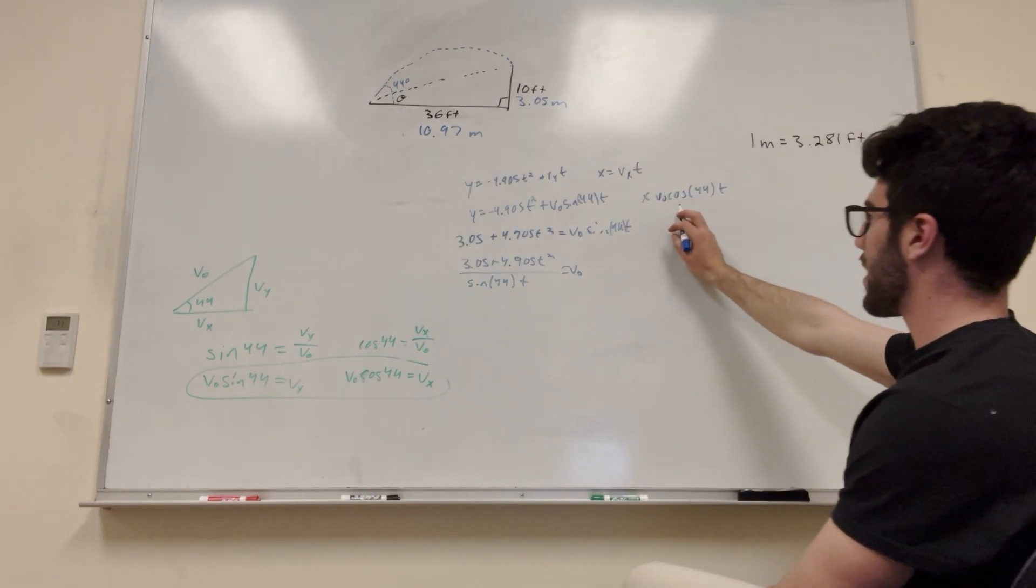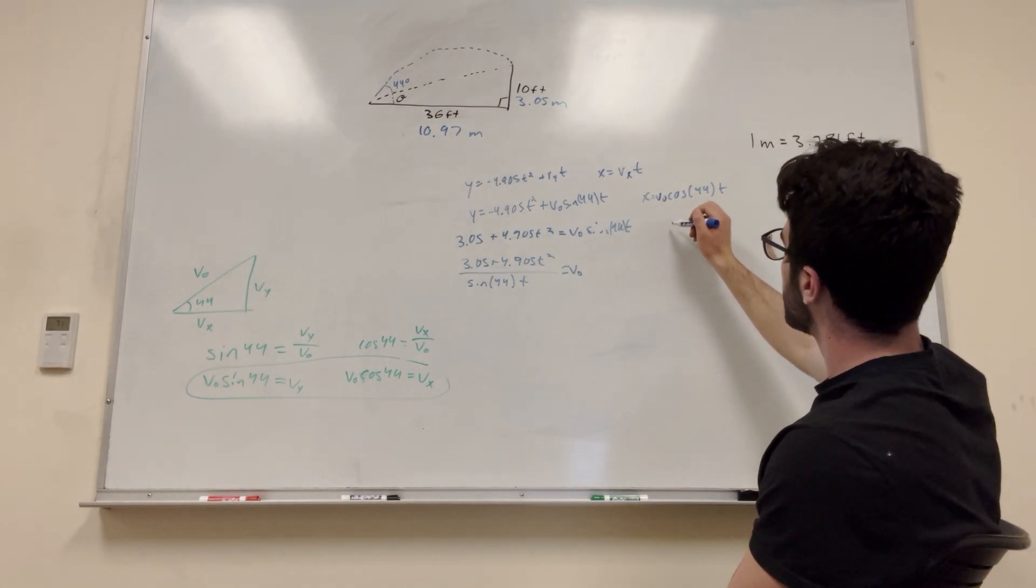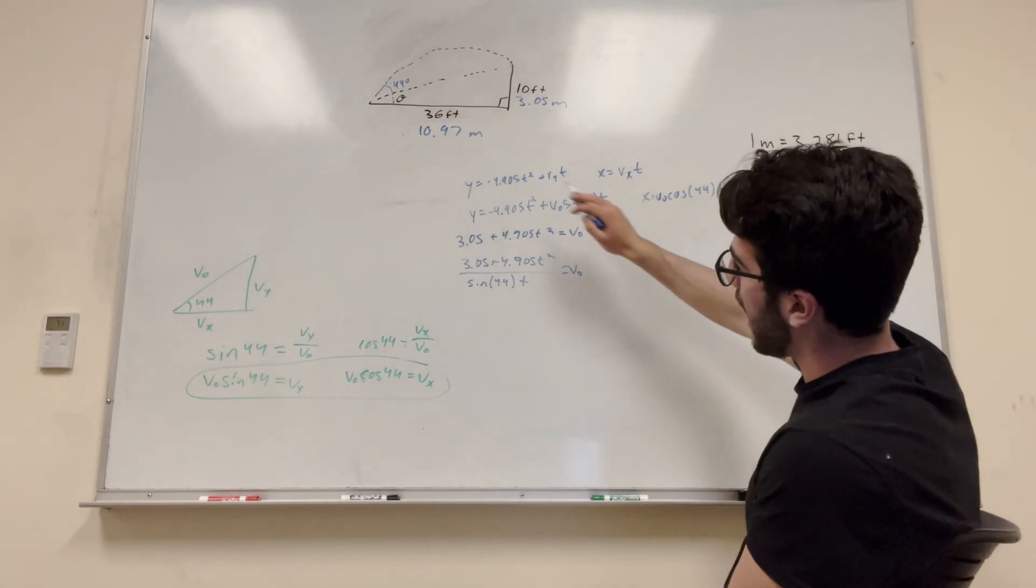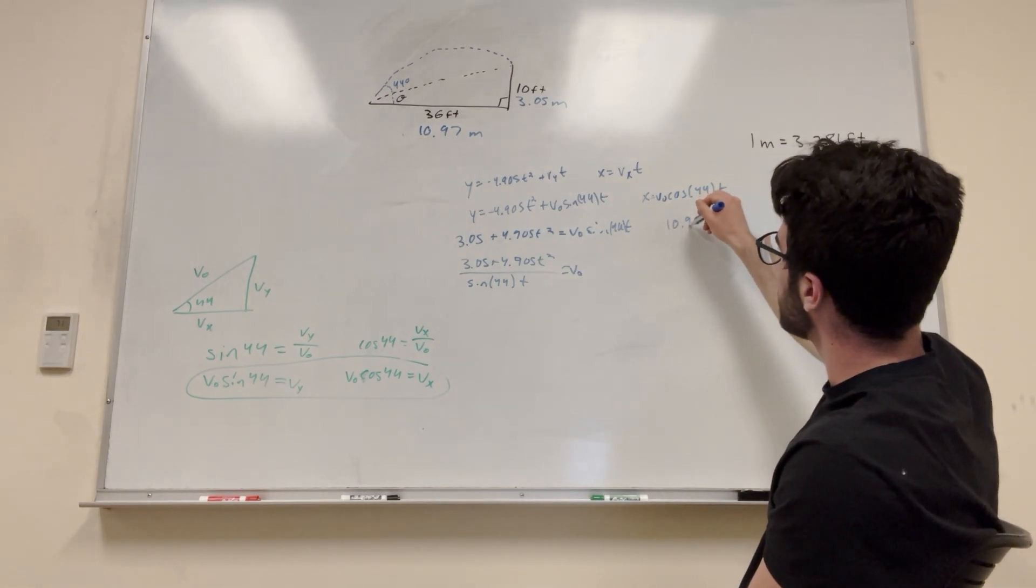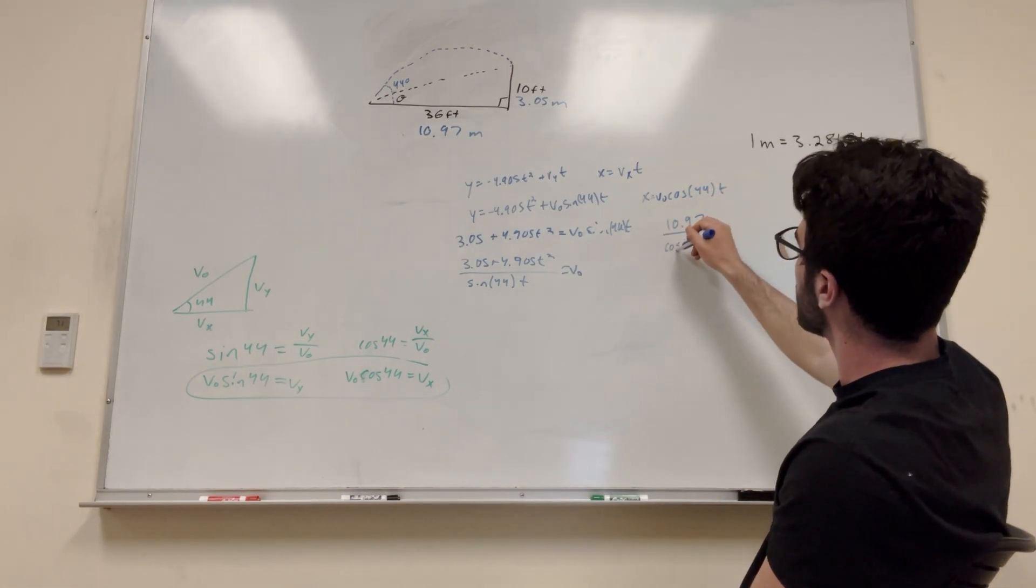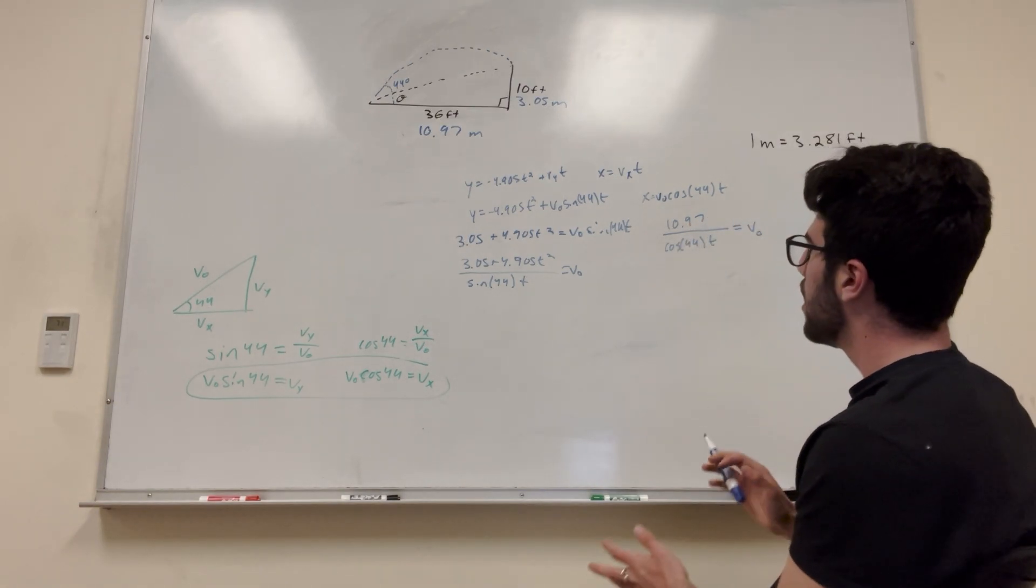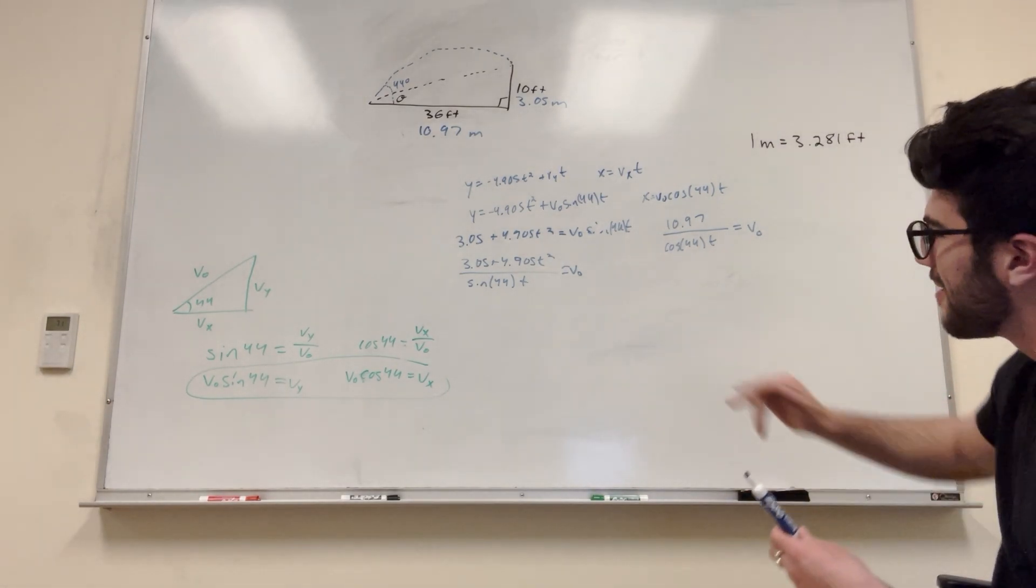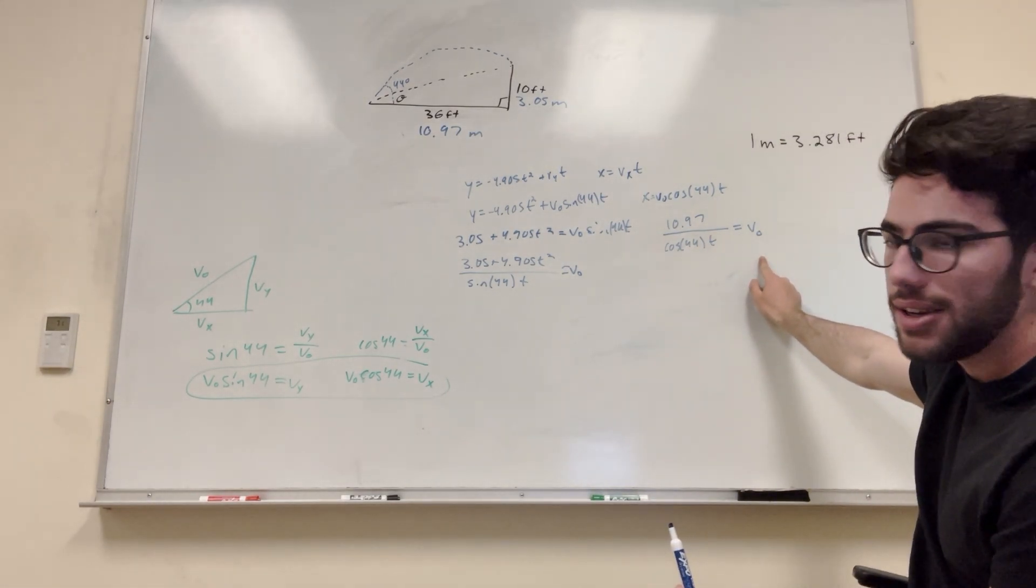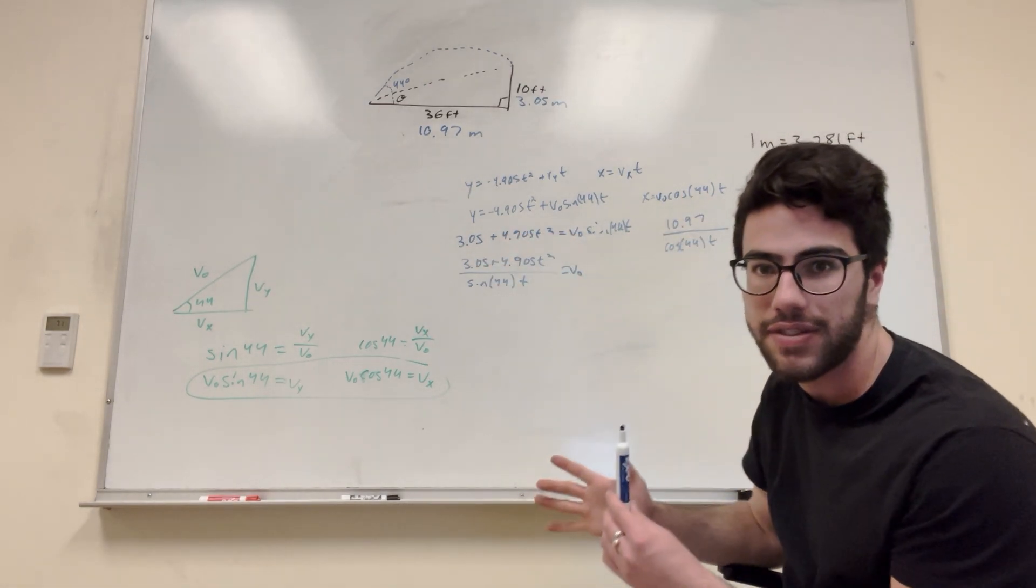So let's start over here. So what we're looking for is Y. We want it to be at its ending point here, so that's 3.05 meters. So 3.05. Now let's add this number to the other side, 4.905 T squared. That's equal to V-naught sine of 44 T. And then we're going to divide by both of those to get V-naught by itself. We need V-naught divided by sine of 44 T. So that's going to be 3.05 plus 4.905 T squared over sine 44 T is equal to V-naught. Perfect. Now if we go over here, we can do the same thing. Divide by cosine 44 T. But we also know what X is. We want X to be 10.97 meters. So it's going to be 10.97 divided by cosine 44 T is equal to V-naught.